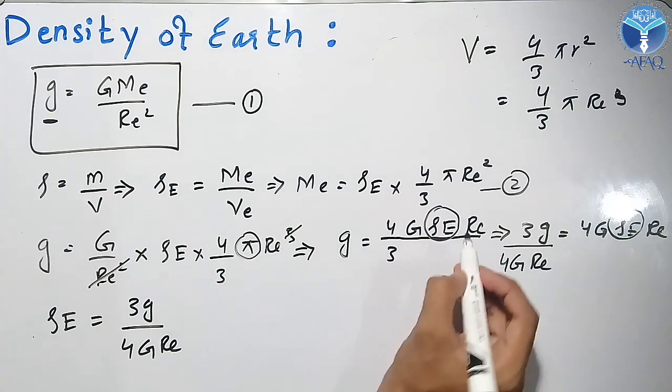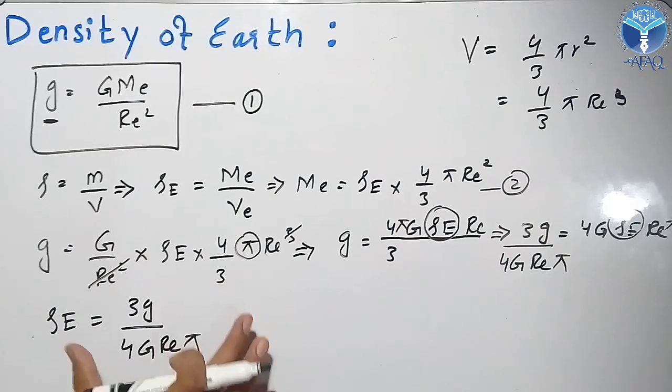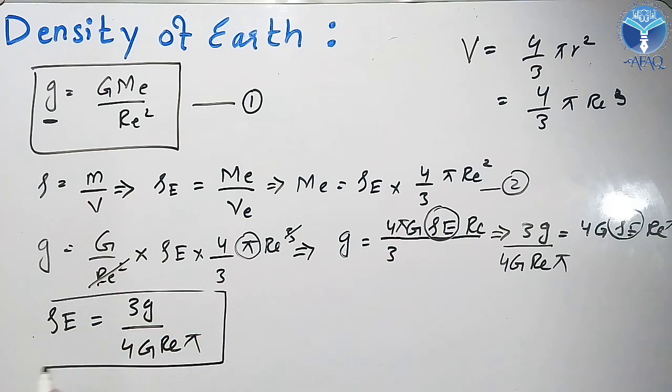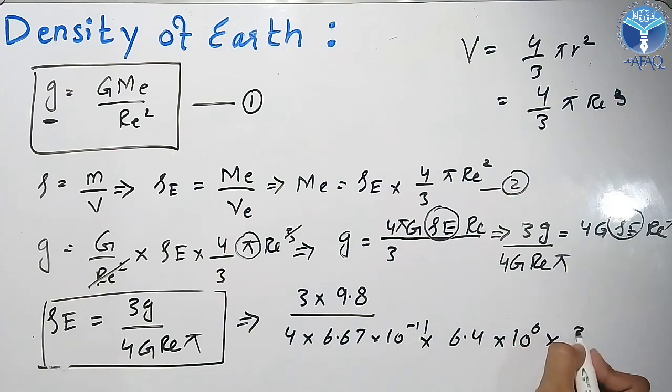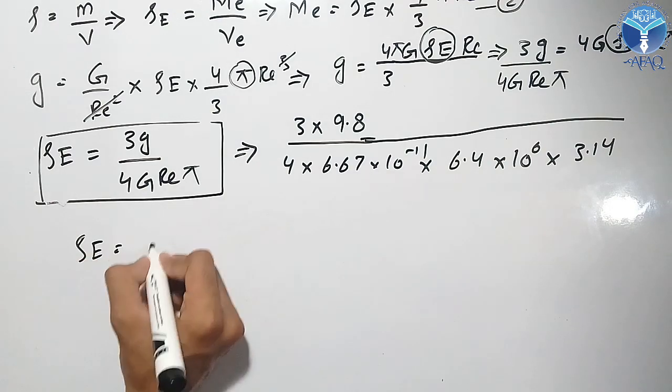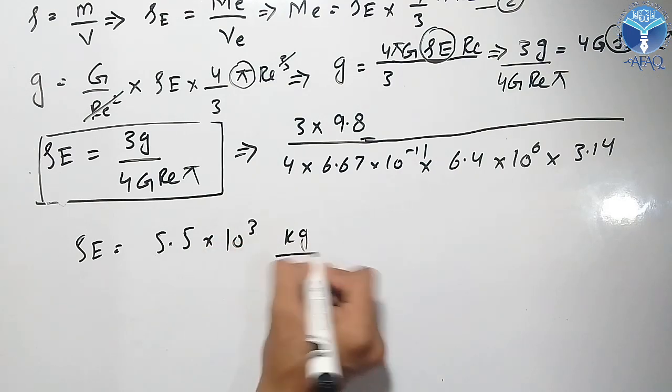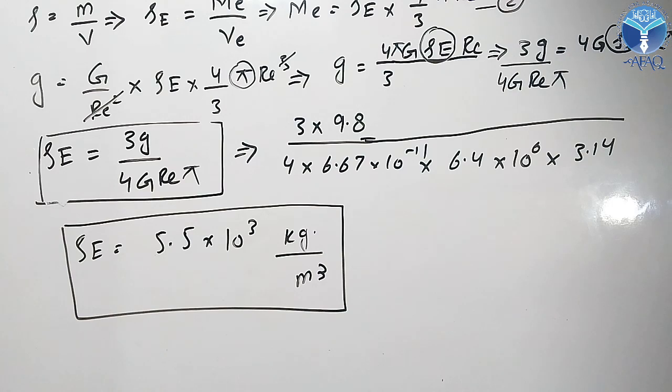So I will get the density of the Earth is equal to 3g/(4GRₑπ). Here I have to include π in the formula. If I multiply these values, that will give me ρₑ = 5.5 × 10³ kg/m³. That is mass per unit volume, and this is the value of the density of Earth.